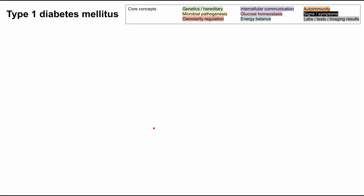This is a mechanism of disease map for type 1 diabetes mellitus. As with all these mechanism of disease maps, the core concepts will be color-coded for each of the boxes in the diagram according to this key up here. This is going to be a relatively short one, and we'll be going through the etiology of type 1 diabetes, leading into the pathophysiology and the manifestations. And in general, from left to right, it'll cover these categories: etiologies, pathophysiology, and manifestations.